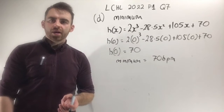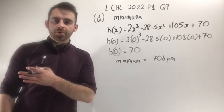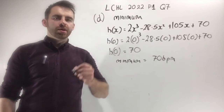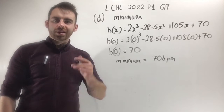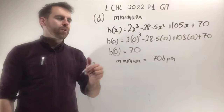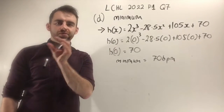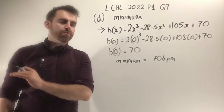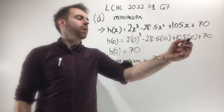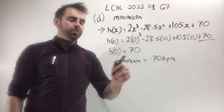In part d, we're asked to use calculus and our graph to identify the minimum and maximum values for h(x). Looking at the graph, the lowest point is clearly at the very beginning when x equals 0. Within the range from 0 to 8, the minimum value is at the start. When you sub in x equals 0, everything cancels out except the constant at the end, so the minimum possible value is 70 beats per minute.